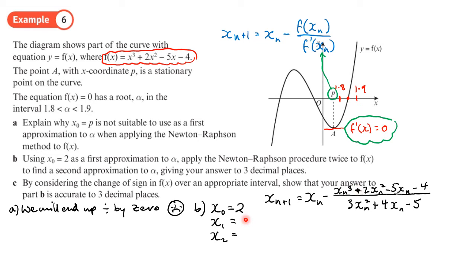So after pressing equals once I get 1.86 recurring. Press equals again and I get 1.8... how many decimal places does it say? 3 decimal places, so 1.856. All right, looks like it's converging very quickly.